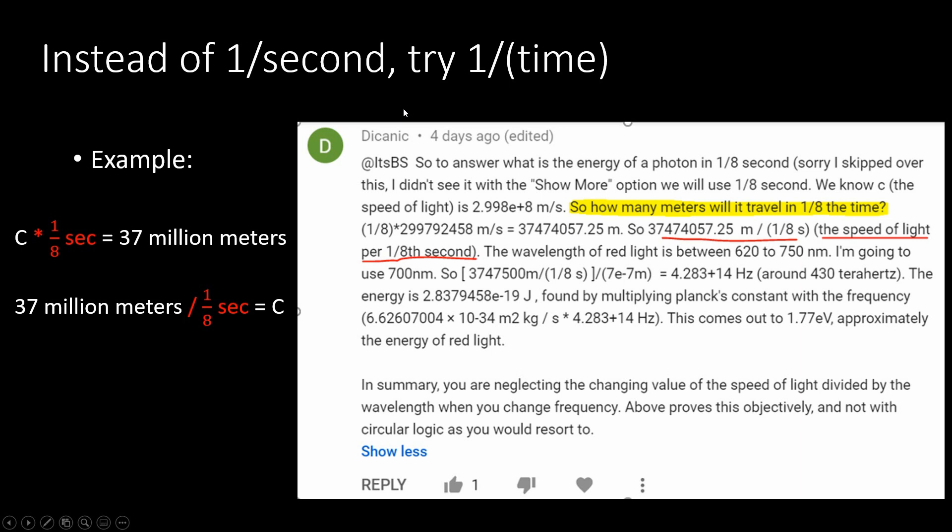So here is the first argument to show what I did wrong there. We both agree that I take the 1/8th second and multiply it by the speed of light, but then what I didn't do was take that answer and then divide it by 1/8th of a second.